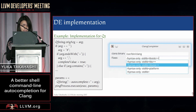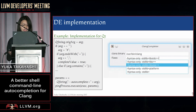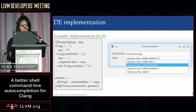And this is an example of a Qt implementation. If you want to integrate this feature with an IDE like Qt, you have to pass commands by the same rule as the shell and execute Clang from your IDE.